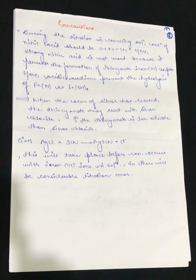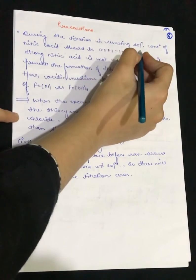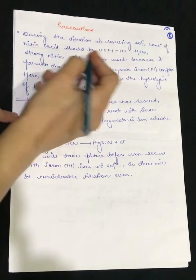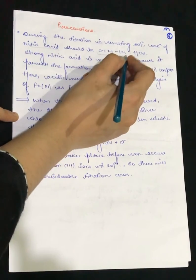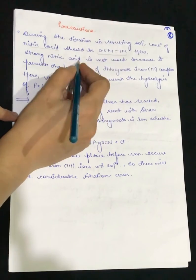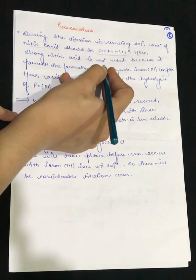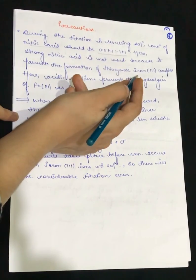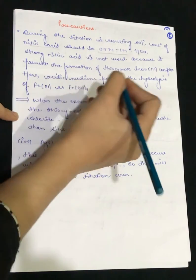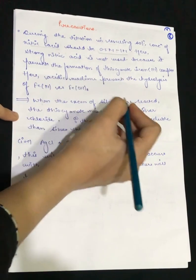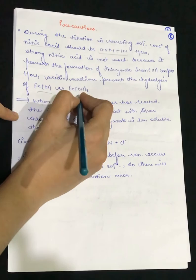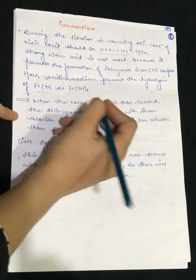These are the precautions to take in Volhard's method: in the resulting solution, the concentration of nitric acid should be 0.5 to 1 molar. Strong nitric acid is not used because it prevents formation of the thiocyanate-iron complex. The acidic medium also prevents hydrolysis of ferric ions to ferric hydroxide.